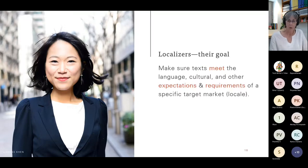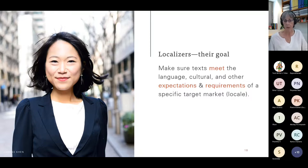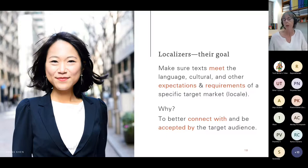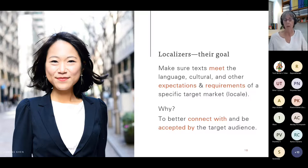The goal of the localizer is to make sure the text meets the language, cultural, and other expectations and requirements of a specific market or locale — so we can better connect with and be accepted by the target audience. Here's a localization fail example: in 2018, Puma created a limited-edition shoe line using the colors of country flags. In the United Arab Emirates this did not go over well for two reasons: they consider the flag a sacred symbol, and feet are considered culturally unclean.